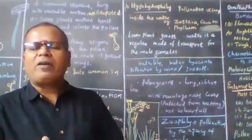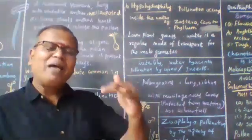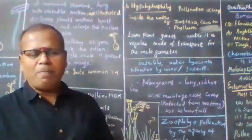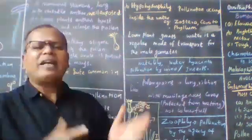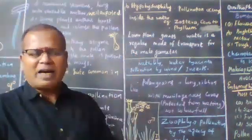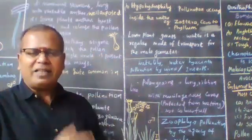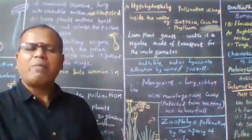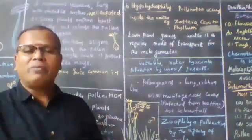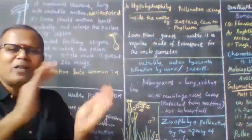Comparing epihydrophily and hypohydrophily, we can draw an analogy to germination types — epigeal germination and hypogeal germination. In epigeal germination, the hypocotyl grows faster and the cotyledon comes above the soil. In hypogeal germination, the cotyledon remains buried inside the soil.